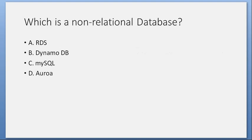Which is a non-relational database? A. RDS. B. DynamoDB. C. MySQL. D. Aurora. Answer: B. DynamoDB.